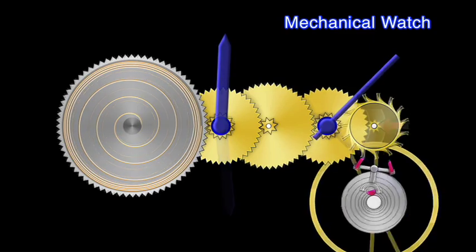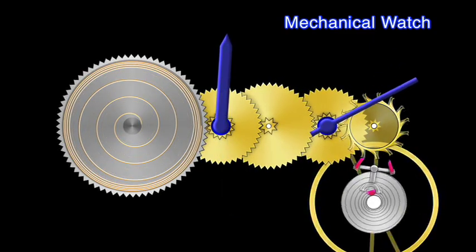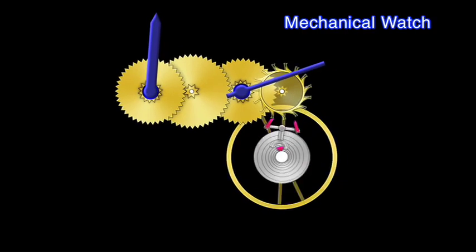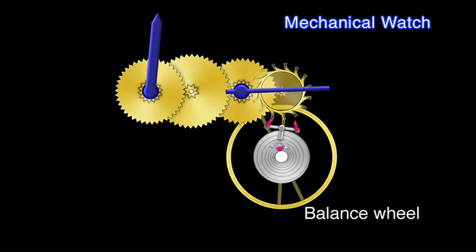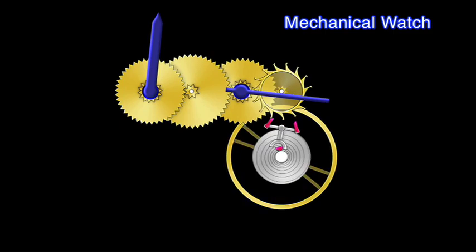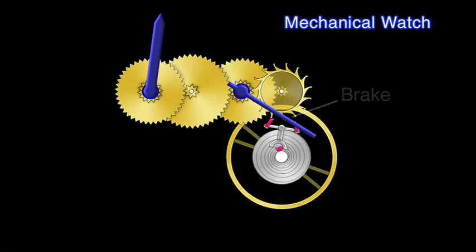Traditional mechanical watches used a ring-shaped balance wheel, which moves back and forth. This oscillation movement sets a standard for watch accuracy, and the small collisions between components produced a force to put a brake on the unwinding force of the spring.